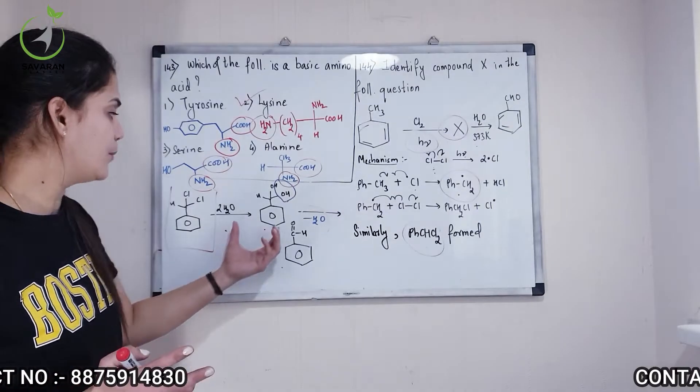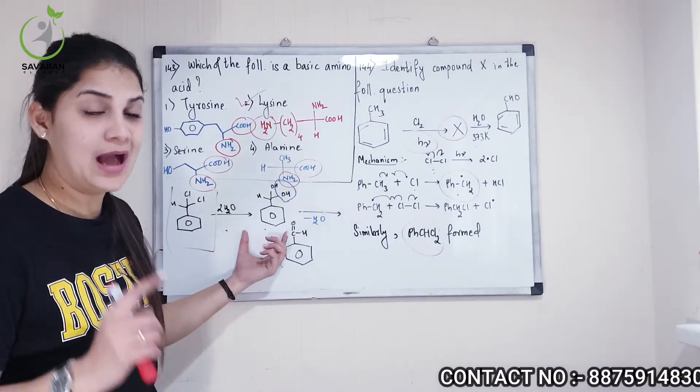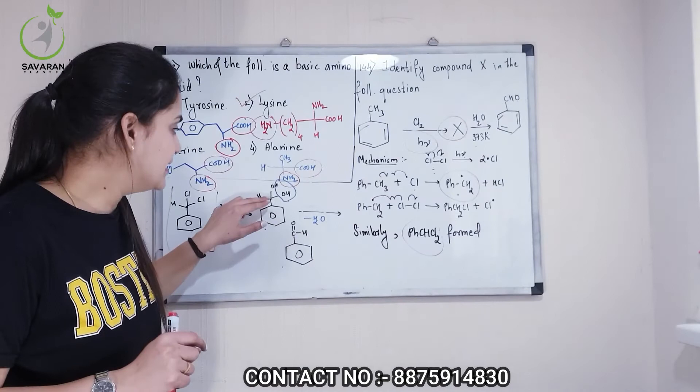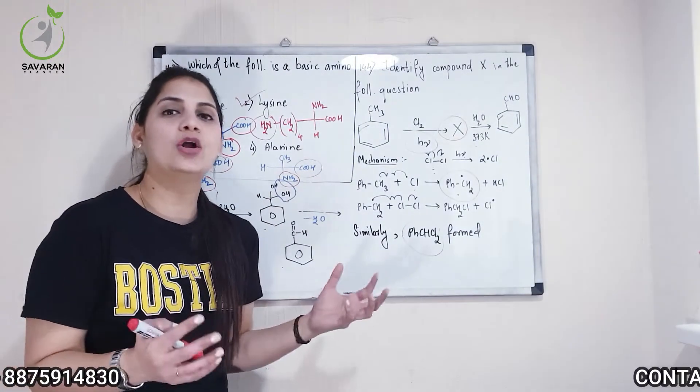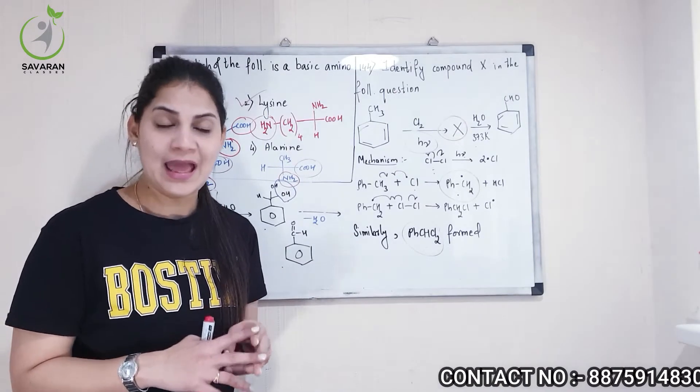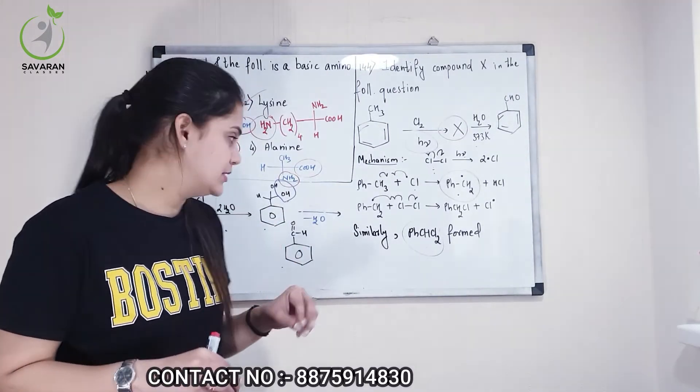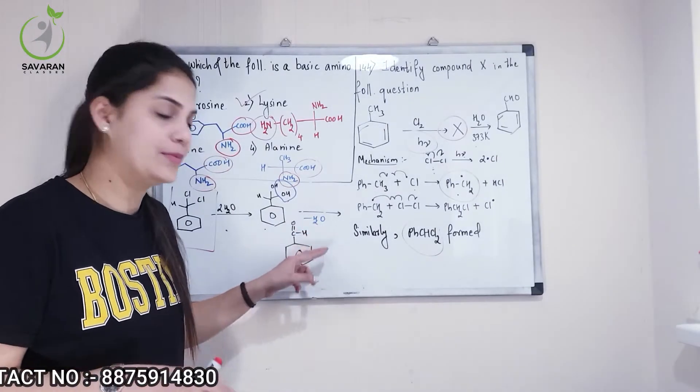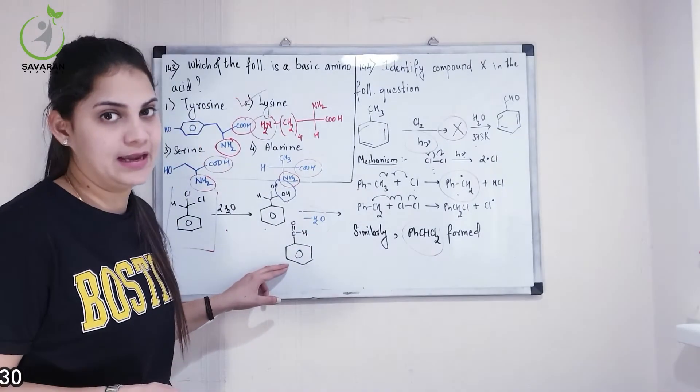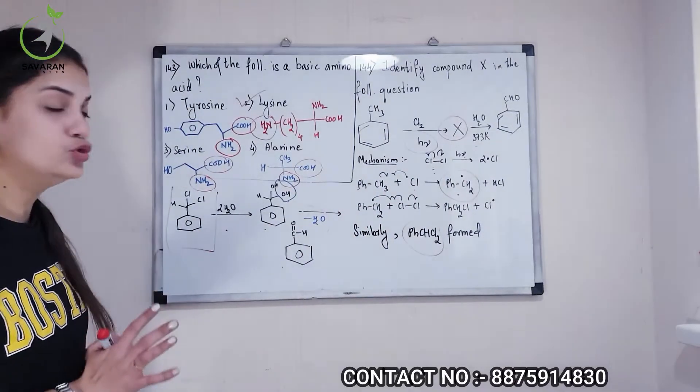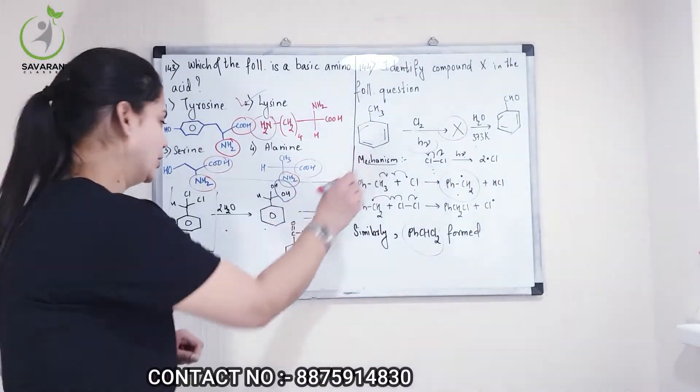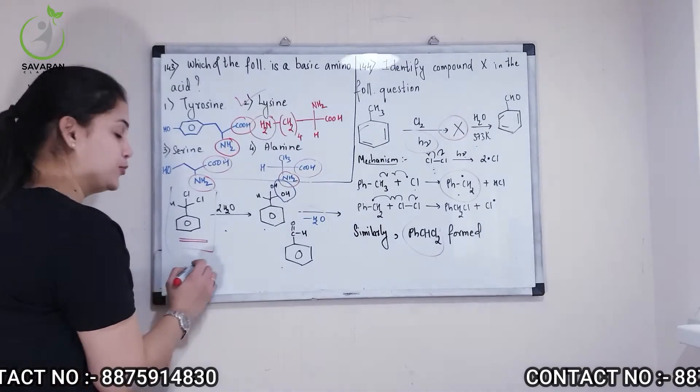Ab ye benzyl chloride agar aap water ke saath react karo ge, 2 moles of water, to aapko ye particular molecule mleega. Abh yaan pe problem kya hai - you can see that one carbon is having 2 OH group. We know that one carbon cannot have 2 OH group, right. That is the reason it will immediately undergo dehydrolysis. Dehydrolysis ke baad aapko kya mle jayega - you will get benzaldehyde. That is what you need, right. So yaap emko puchha kya - interminate puchha hai x kya hogha to aapka x ye hogha and this is your option number 2. So for question number 144 the answer will be option number 2.